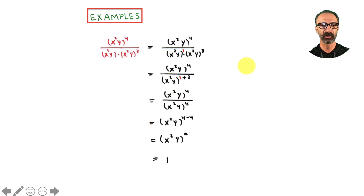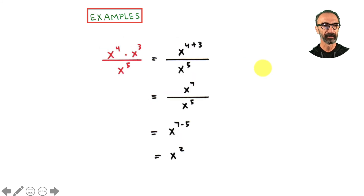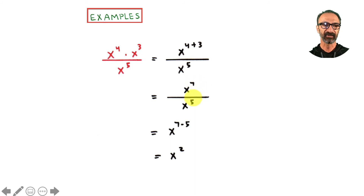One more example: x to the fourth times x to the third over x to the fifth. Add the exponents in the numerator: four plus three is seven. Then apply the quotient rule: seven minus five equals two. So the answer is x squared.